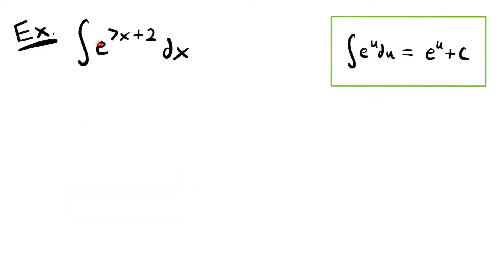Next, we have the integral of e to the power of 7x plus 2 dx. For this integral, we're going to need to use u substitution. Anytime you see e to the power of some function that isn't x, that's a good indicator that you might want to use u substitution and set that exponent equal to u. Here we have that the integral of e to the power of u du is equal to e to the power of u plus c.